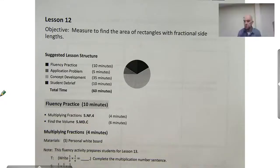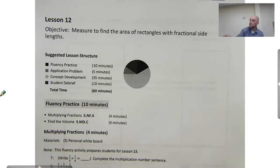Hello everyone, it's Mr. Kissinger at the Citizenship Academy in Syracuse, New York, and this is 5th grade math module 5, lesson 12. Today we're going to be measuring to find the area of rectangles with fractional side lengths.